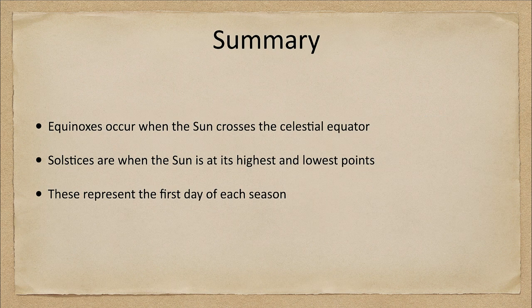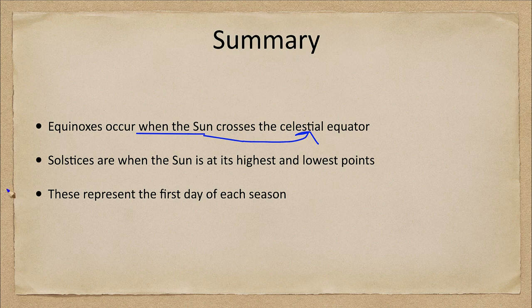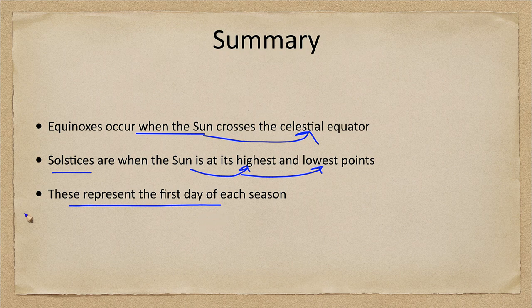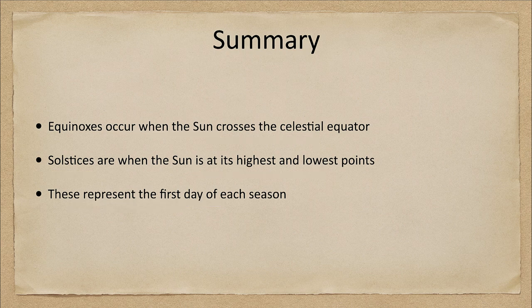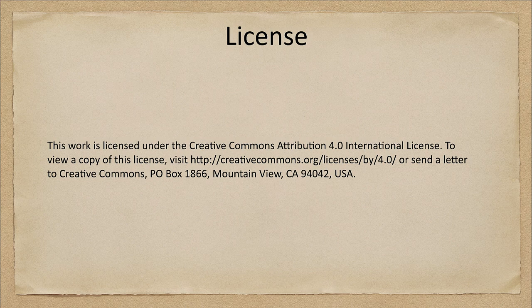To summarize: the equinoxes occur when the sun crosses the celestial equator — the vernal equinox in spring and the autumnal equinox in fall. The solstices occur when the sun is at its highest and lowest points, and these represent the first day of each season. That concludes this lecture on the equinoxes and solstices. We'll be back next week for another special topic in astronomy — have a great day everyone and I will see you in class.